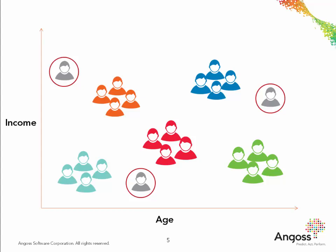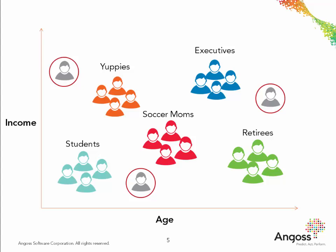Based on an understanding of the variables that characterize each cluster, you can assign a name or meaning to each cluster. For example, the cluster in the lower left corner containing young individuals with low income might be labeled 'students,' or the cluster of young individuals with high income may be labeled 'yuppies.' These labels describe and summarize the characteristics of the cluster.